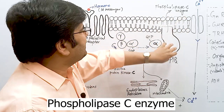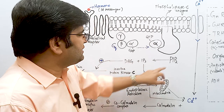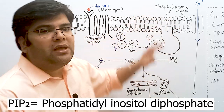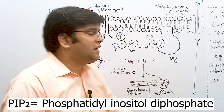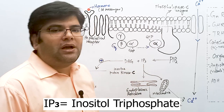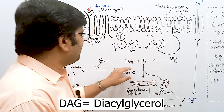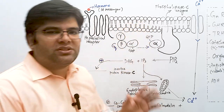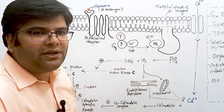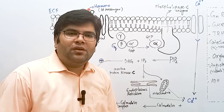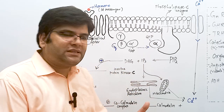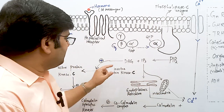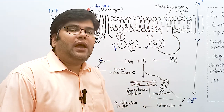Phospholipase C acts on the membrane phospholipid called phosphatidylinositol diphosphate (PIP2), which is present within the cell membrane. PIP2 is converted into two products: IP3, also called inositol triphosphate, and DAG, diacylglycerol. DAG, which remains in the cell membrane, acts as a second messenger and activates an enzyme called protein kinase C. When DAG is absent or low, protein kinase C is inactive; when DAG is formed, protein kinase C becomes phosphorylated and activated.